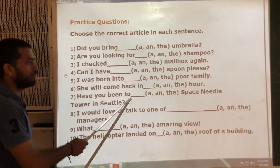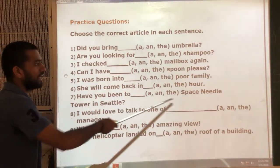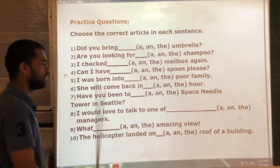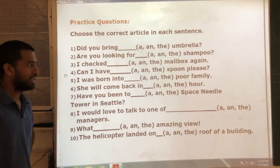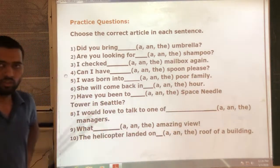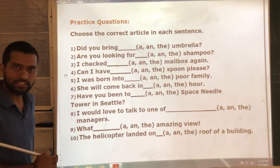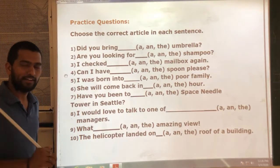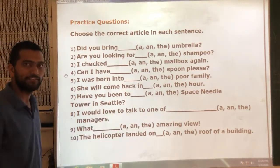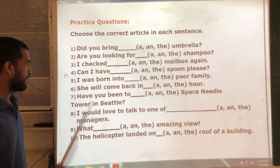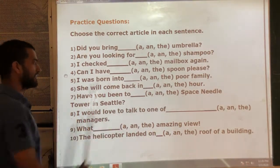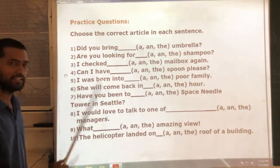Next: 'Have you been to ___ Space Needle Tower in Seattle?' There is only one Space Needle Tower, so it is a unique thing. For unique things, we use the article 'the'. Have you been to the Space Needle Tower?